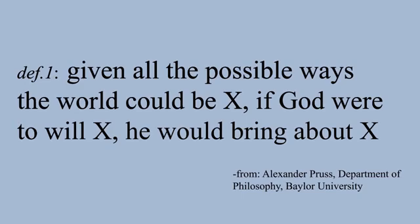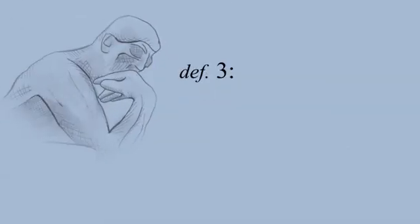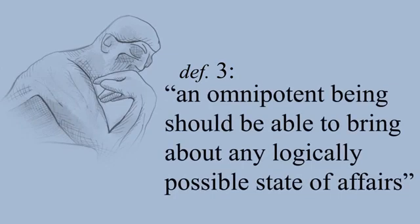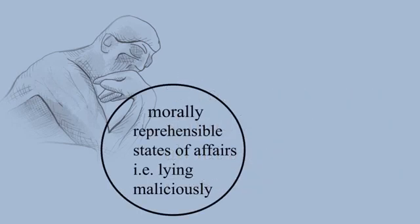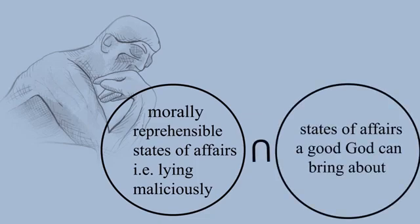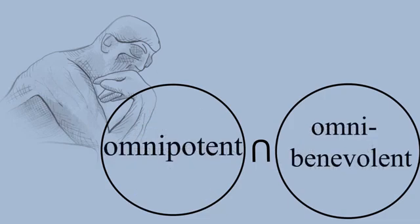The last objection is to another common definition of omnipotence, which is definition 3: An omnipotent being should be able to bring about any logically possible state of affairs. Critics allege this definition suffers from a problem. According to the philosopher Augustin Echeverria, there are some logically possible states of affairs which are morally reprehensible, such as lying maliciously, and which a perfectly good being cannot bring about. Therefore, there cannot be an omnipotent being who is also perfectly good.